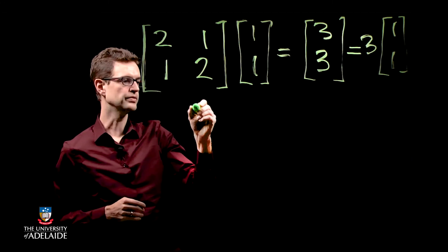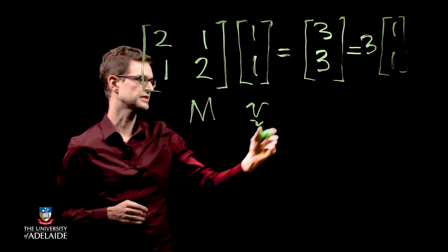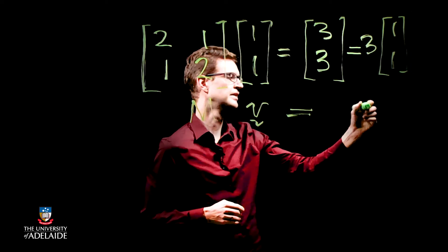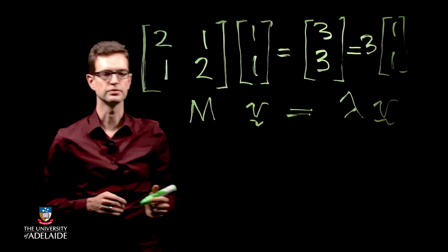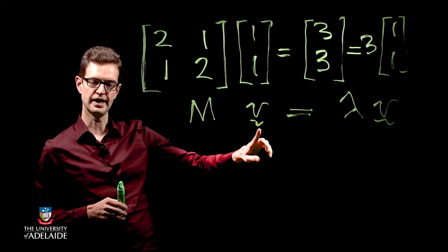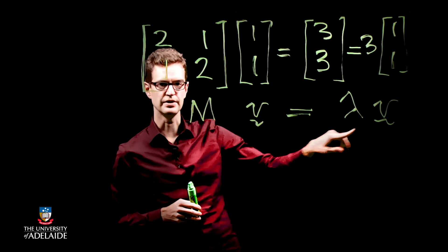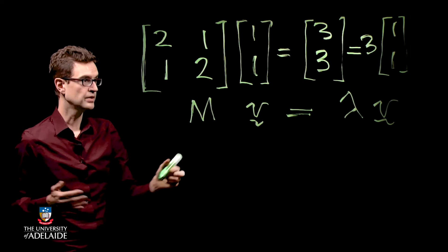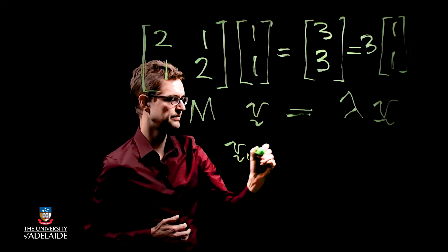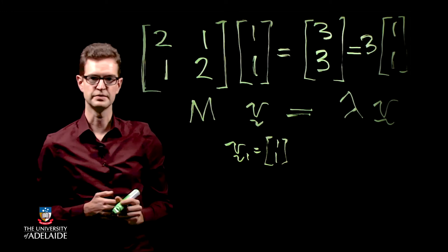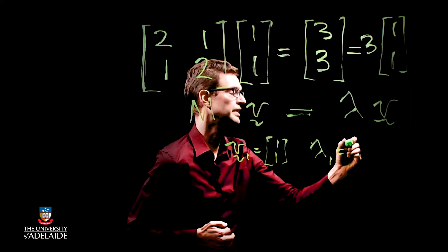In general, whenever I take a matrix times a vector and get the same vector back multiplied by a number lambda, we call v an eigenvector of the matrix M and lambda an eigenvalue of the matrix M. So here we have eigenvector v1 = [1, 1] of matrix M, and its corresponding eigenvalue is lambda 1 = 3.